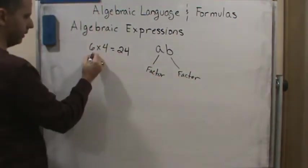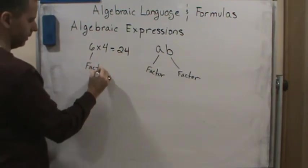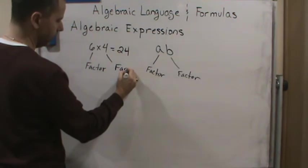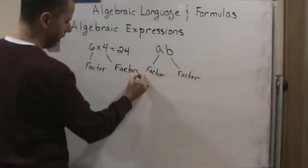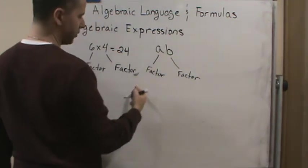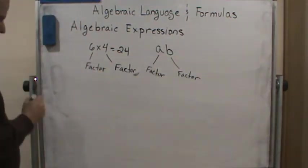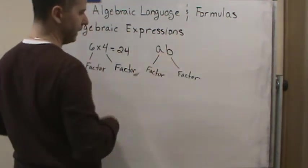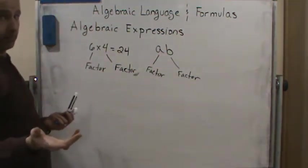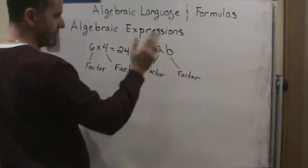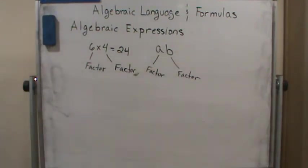Just like here, six and four are factors. It's just that we don't know what these factors are. We do know what these factors are. This is specifically six and four, where maybe these can be any number, right? We can, it can be anything, okay? But that's what we mean by factor.